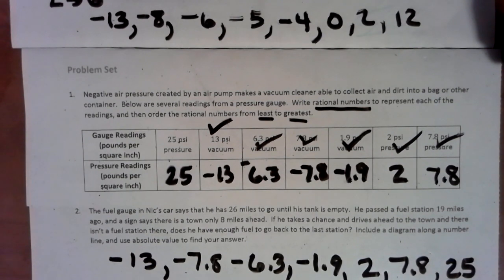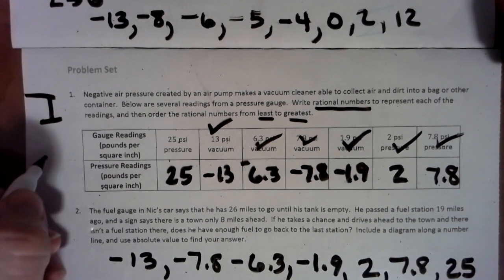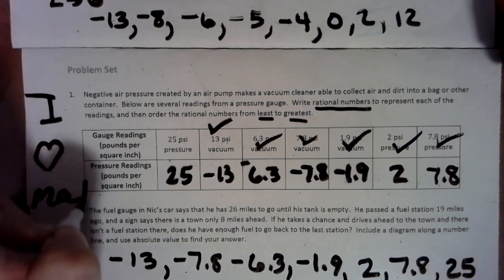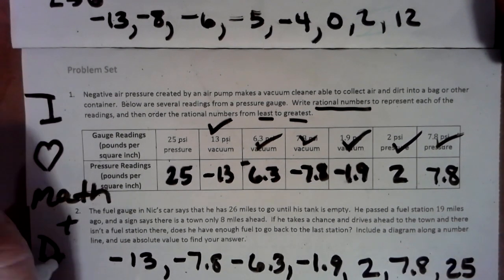So there you go. That's ordering integers, negative and positive numbers, from least to greatest. Biggest negative to the biggest positive. Thank you. Have a great day. And as always, I love math and diet coke.